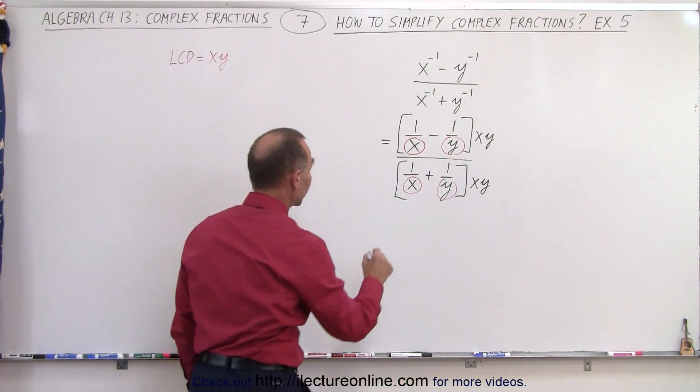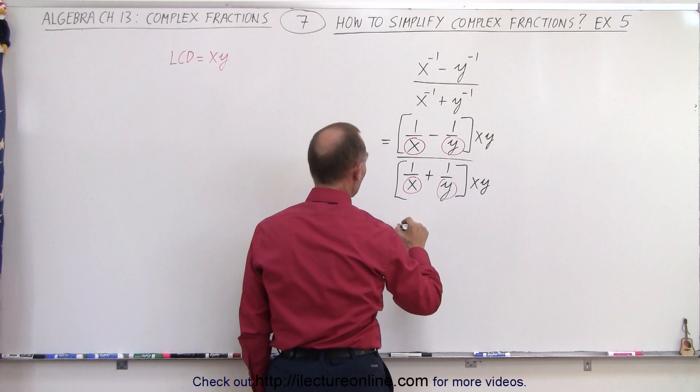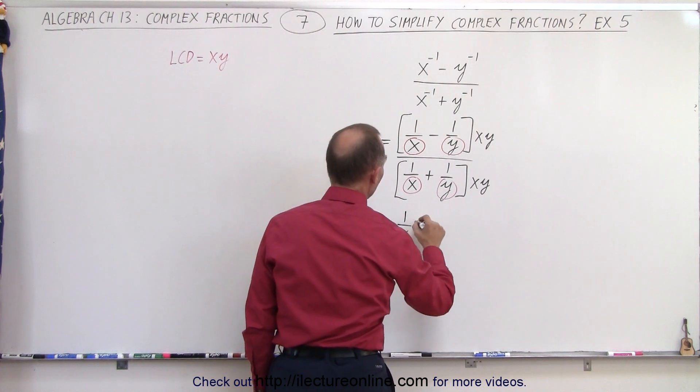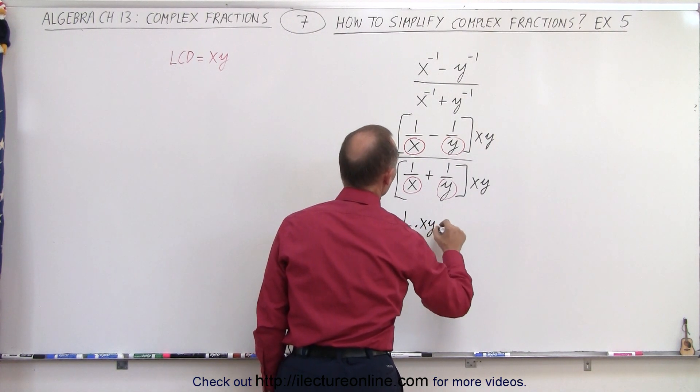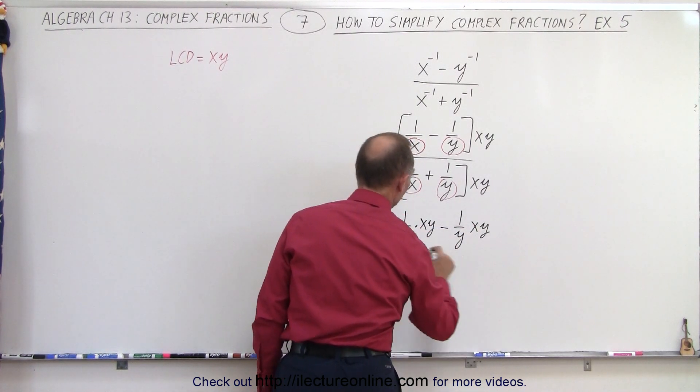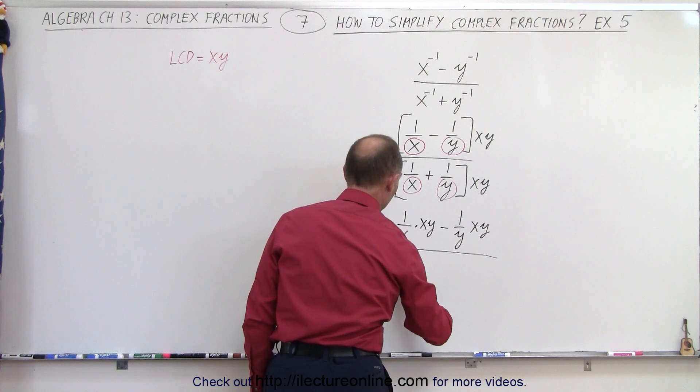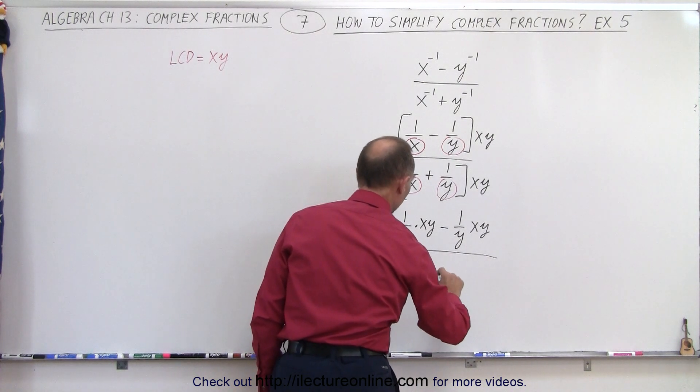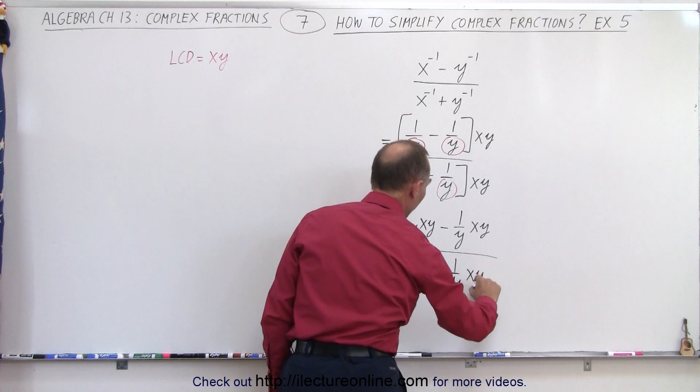Now when we multiply these together, let's see what we get. So we have 1 over x times xy minus 1 over y times xy divided by 1 over x times xy plus 1 over y times xy.